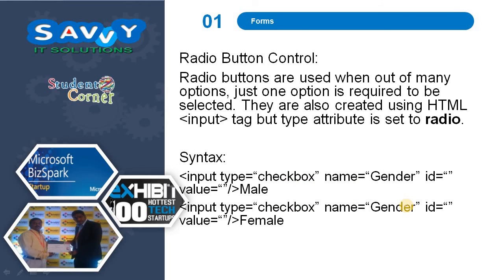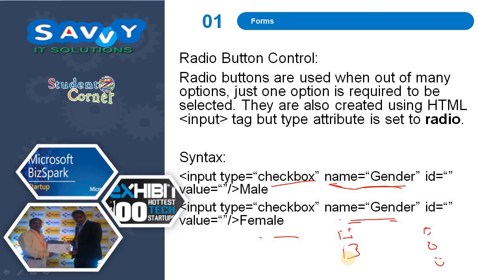Radio buttons are used when out of many options just one option is required to be selected. They are also created using the HTML input tag but the type attribute is set to 'radio'. If checkbox names are equal, it automatically groups them. Radio buttons are indicated with a round marker, checkboxes with a square marker — you can select multiple checkboxes but with radio buttons only one option can be selected.